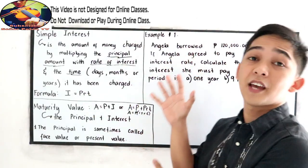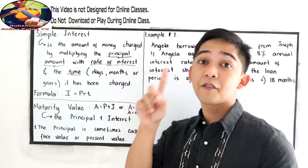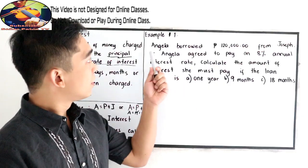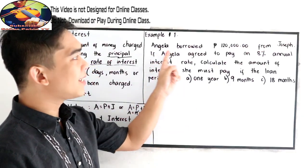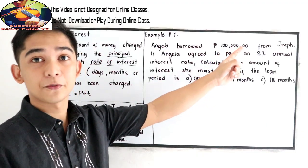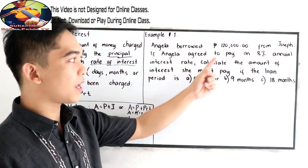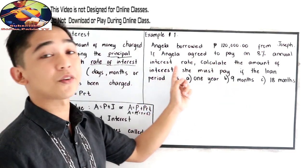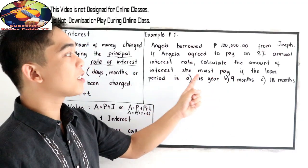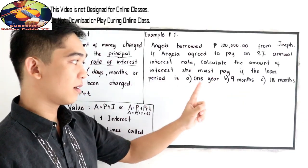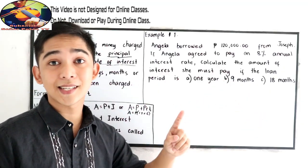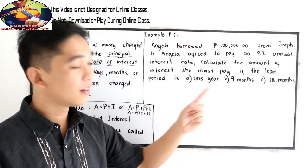So to better understand our simple interest, let's have this first example. Example number one. Angela borrowed $120,000 from Joseph. If Angela agreed to pay an 8% annual interest rate, calculate the amount of interest she must pay if the loan period is A, one year, B, nine months, and C, 18 months.